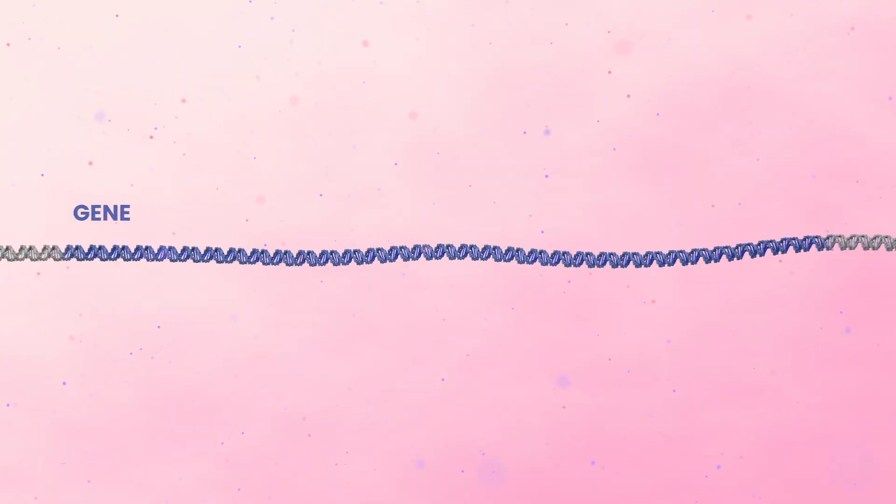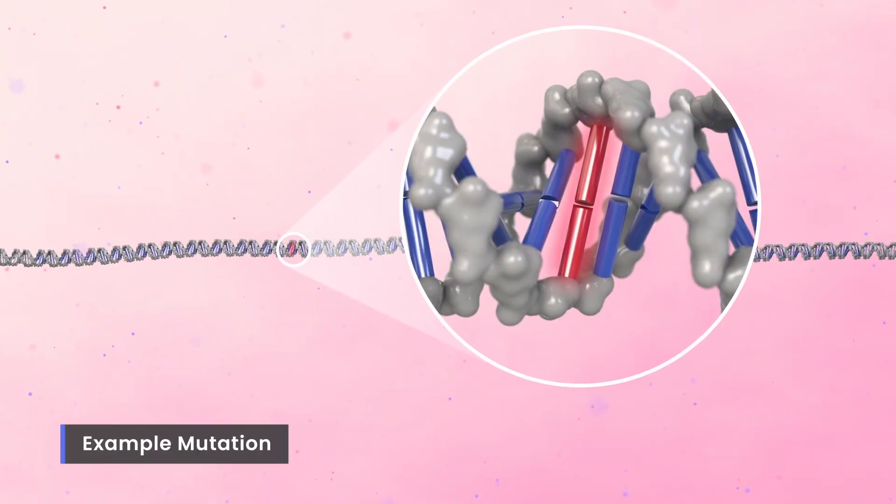An example of a mutation in the patient's gene is indicated by a highlighted base pair in a DNA double helix.